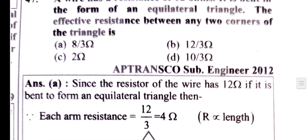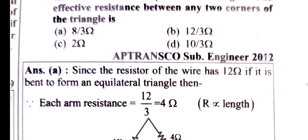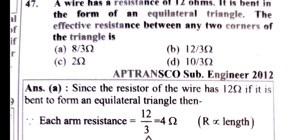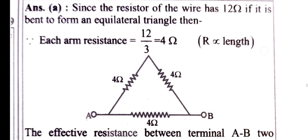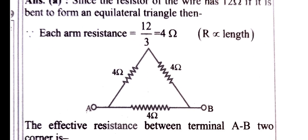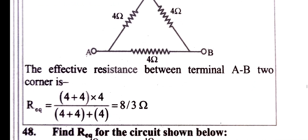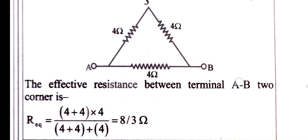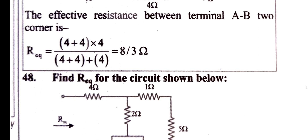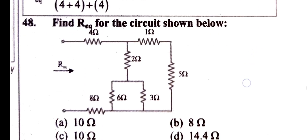A wire has a resistance of 12 ohm and is bent in the form of an equilateral triangle. The effective resistance between any two corners of the triangle: the wire forms a triangle, so each side is 4 ohm. Between two corners, two paths are in parallel. The answer is 8 by 3 ohm.